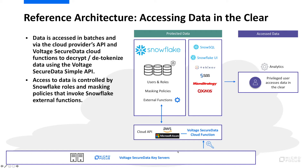The use of the cloud provider's API — whether AWS API Gateway or Azure API Management — is just one way that this combination of technologies could work today. We are also investigating the development of a user-defined function for the Snowflake Data Cloud, where that function would be installed in the Snowflake environment. It would work using our simple API, where it would request a key from the Voltage Secure Data key servers directly, cache that key for optimal performance, and perform decryption operations within Snowflake itself. A REST API would be an alternate approach, and either case would bypass the use of a cloud API.